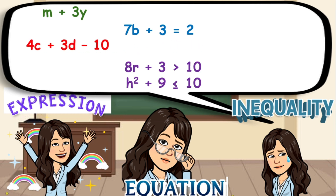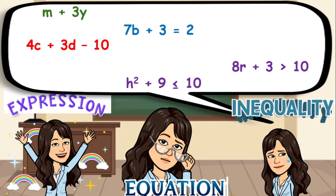Number 4: 8r plus 3 is greater than 10. Is it an expression, equation, or inequality? Correct, it is an inequality. And lastly, h squared plus 9 is less than or equal to 10. Is it an expression, equation, or inequality? Very good, it is an inequality.